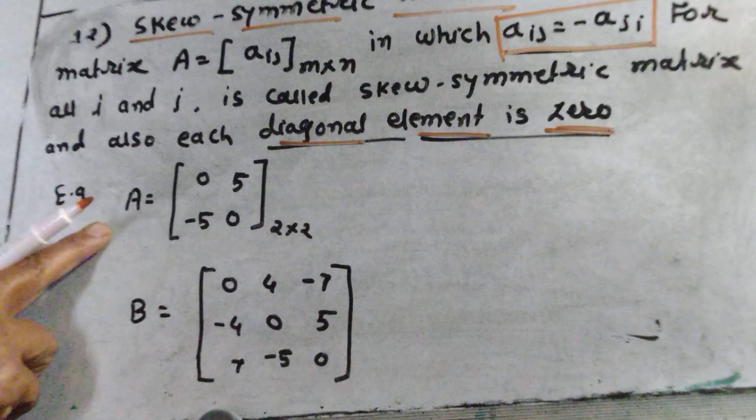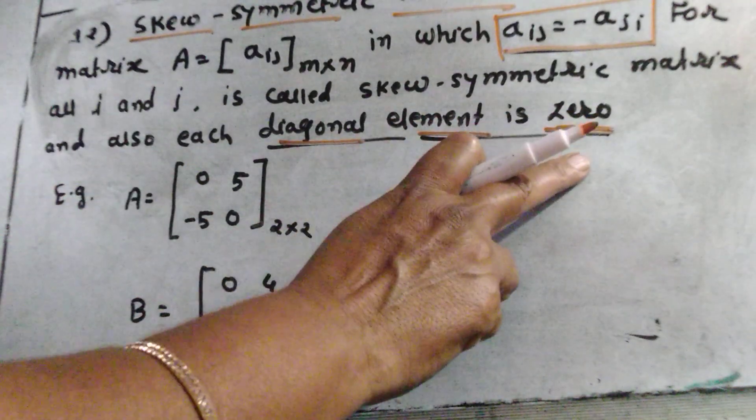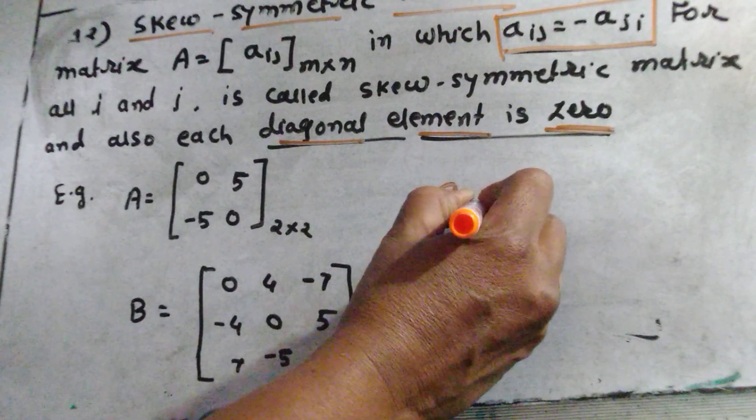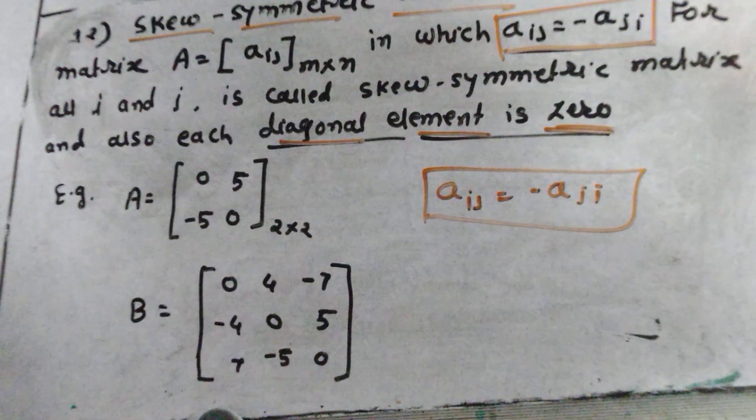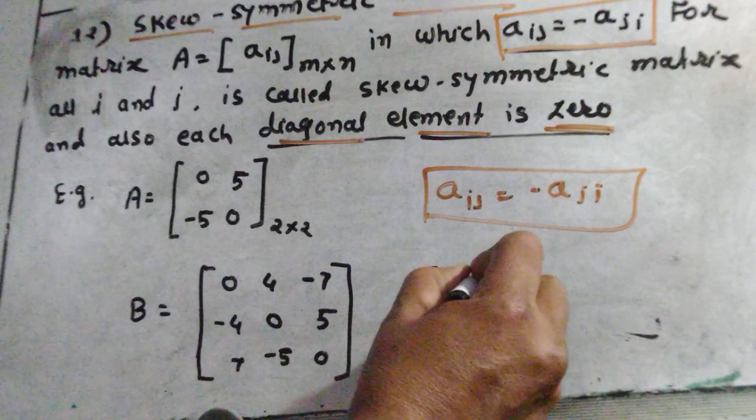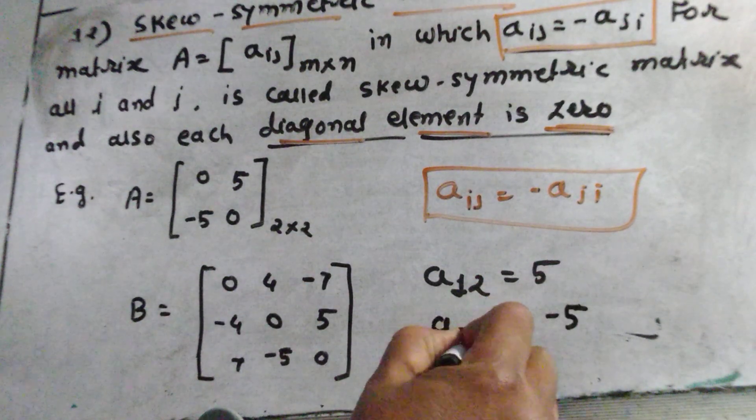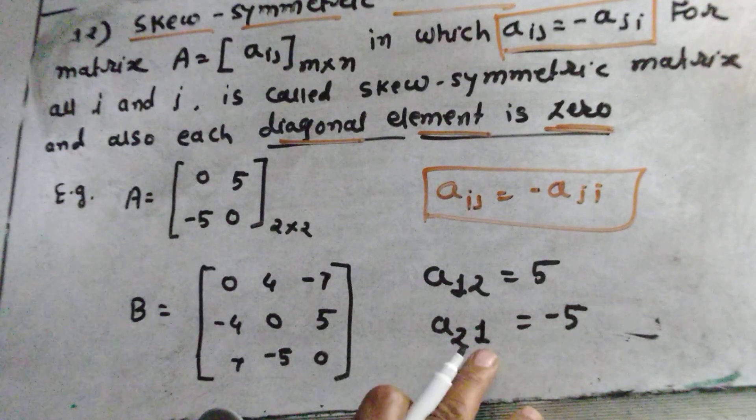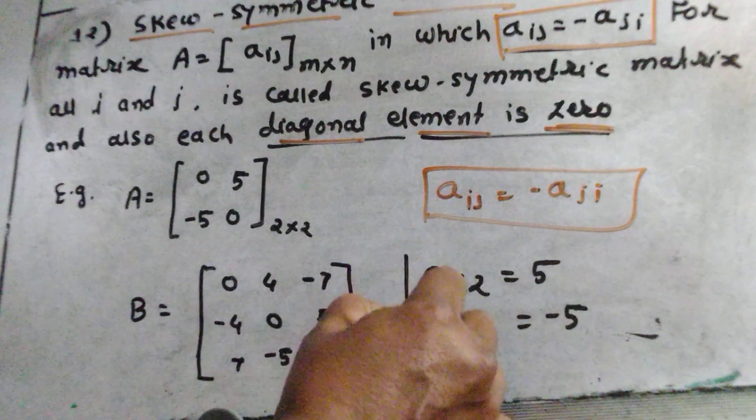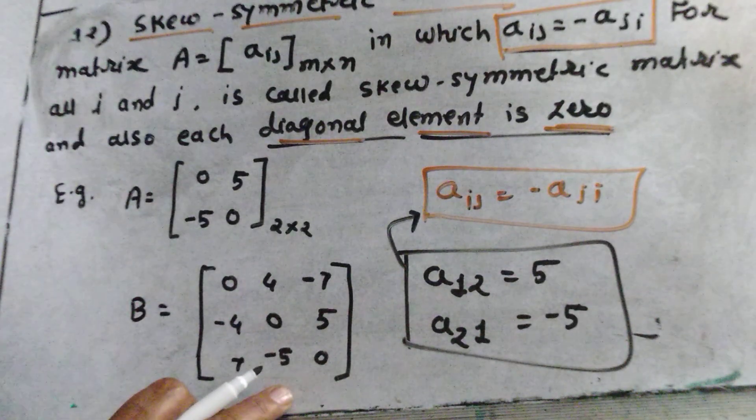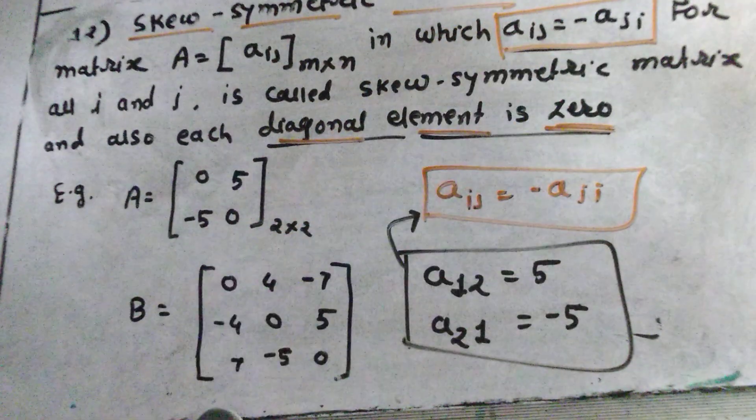For all i and j, aij = -aji. If we check this, we have 5 elements. a12 represents 5, and -5 represents a21, the element in second row and first column. And this element is in first row and second column. This is a skew-symmetric matrix. Current diagonal elements are zero, and aij = -aji.